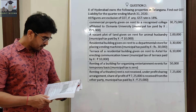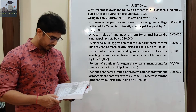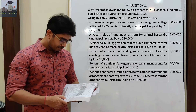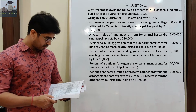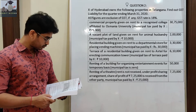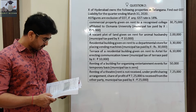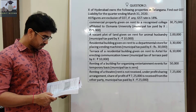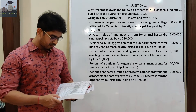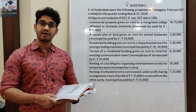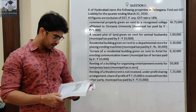Renting of a building for organizing entertainment event on a temporary basis. Municipal tax is zero. Total amount of rent is Rs. 50,000. Renting of a theater — rent is not received under profit sharing arrangement. Share of profit of Rs. 7,25,000 is received from the other party.